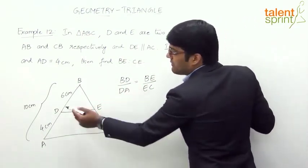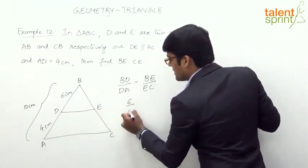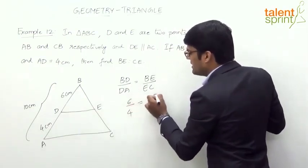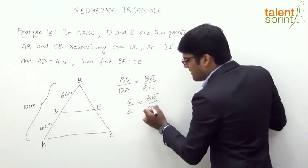Now what is BD? 6 cm and DA is 4 cm is equal to BE upon EC or CE, one and the same.